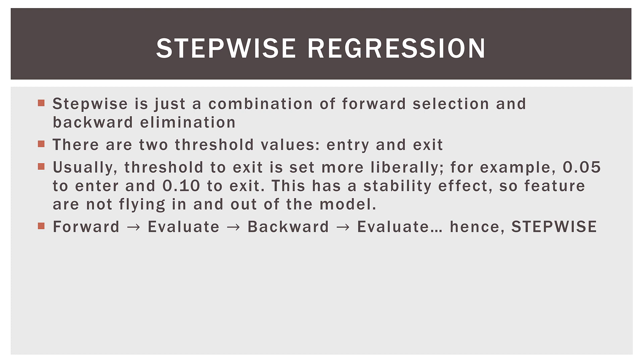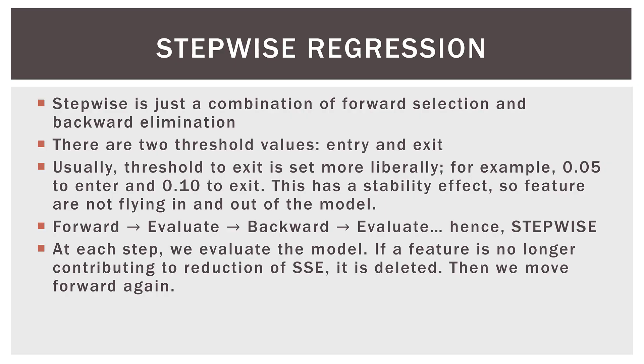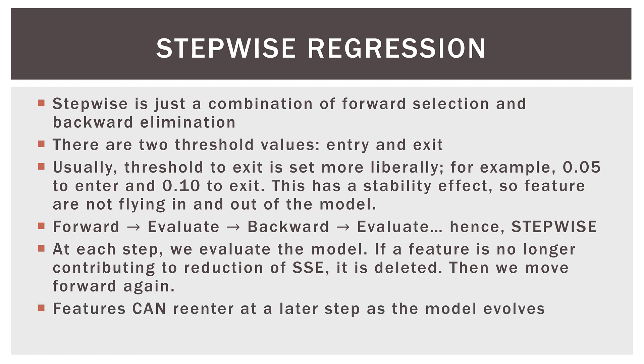The process is very stepped — that's why it's called stepwise. We go forward, evaluate our feature variables, then do a backward step. If any can be eliminated, we evaluate, go forward again, evaluate, backward, and so on. At each step, we evaluate the model. If a feature is no longer contributing to the reduction in error or the SSE, it is removed. Then we move forward again. So features can reenter at a later step, and that's what distinguishes stepwise from the first two methods.